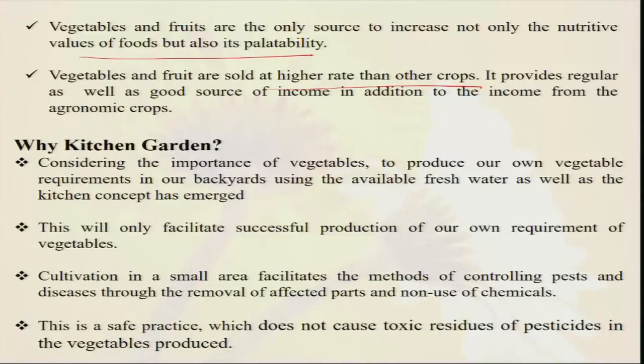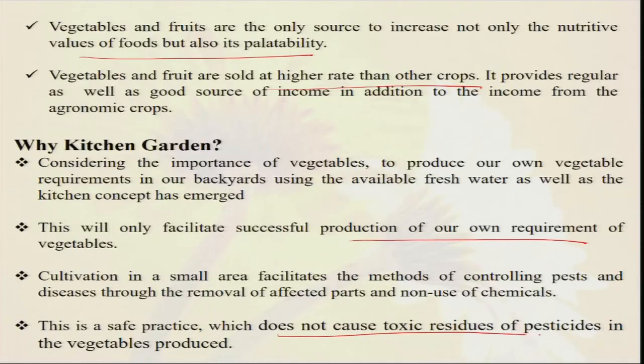They also reduce cost of transportation. In COVID, people always wanted to stay within home due to protocols of not mingling with many people. Those who had organic kitchen gardens or kitchen gardens in their backyards did not have to go frequently to the market. This is always a great advantage. Considering the importance of vegetables, growing vegetables in our own backyard facilitates successful production for our daily requirement. In case of our organic kitchen garden, our main aim is not for commercial purpose — we are mainly growing these crops for daily consumption. But if production is more, we can also sell the produce in the market. This is a safe practice that does not cause toxic residue, so we always get good quality residue-free food.